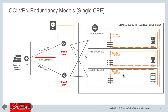Oracle recommends configuring your on-premises router to support both tunnels created by a single IPSec connection. OCI uses asymmetric routing across these tunnels, so your on-premises side should be configured similarly. From OCI's perspective, you have two IPSec tunnels terminating on two different transit POP locations and two different physical routers. However, there is still a single point of failure on the customer premises equipment side — if that single CPE device fails, your remote connectivity goes down.